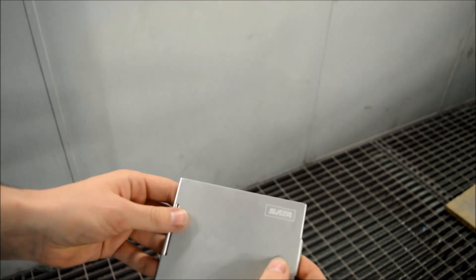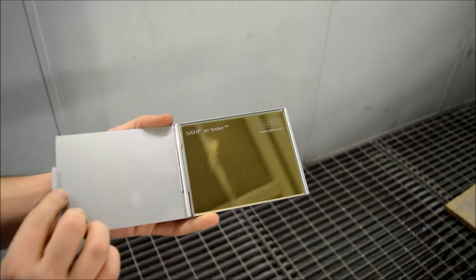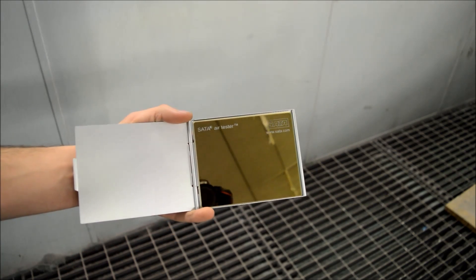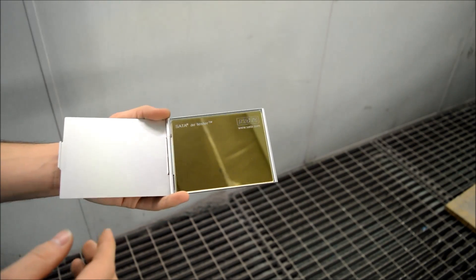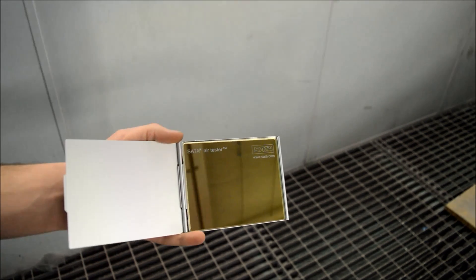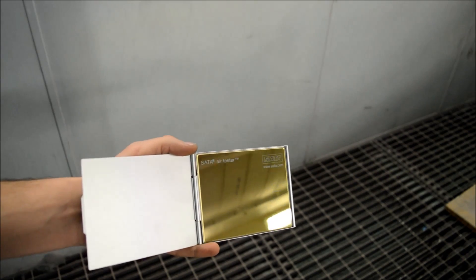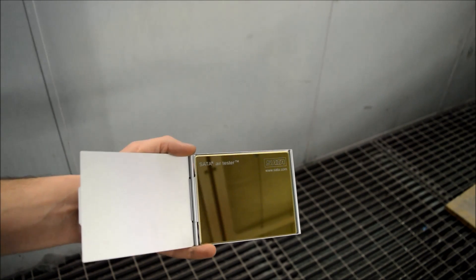We'll open up the SATA air tester and straight away you'll see it's a very highly reflective mirror. This is what helps us pick up any contamination, defects, or anything that could be flowing through that airline.